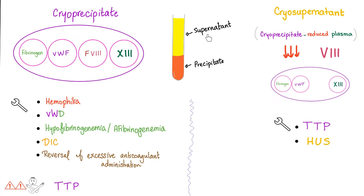Cryoprecipitate includes fibrinogen, von Willebrand factor, factor 8, and factor 13. Clinical uses: hemophilia A — no factor 8, so give factor 8; von Willebrand disease — give the von Willebrand factor; hypofibrinogenemia or afibrinogenemia because it contains fibrinogen; DIC, because DIC consumes all coagulation factors so give cryoprecipitate since it contains many coagulation factors; and reversal of excessive anticoagulant administration. Remember warfarin — you reverse warfarin with fresh frozen plasma; you reverse other anticoagulants possibly by giving cryoprecipitate, because it contains coagulation factors.